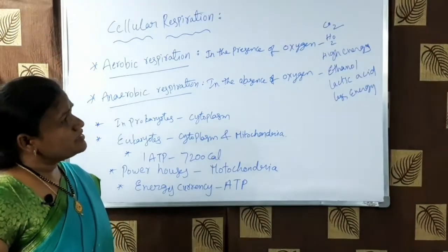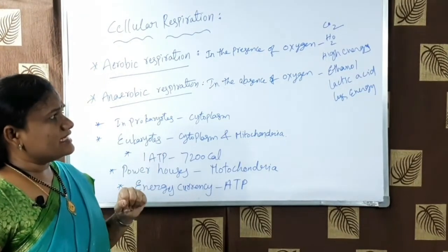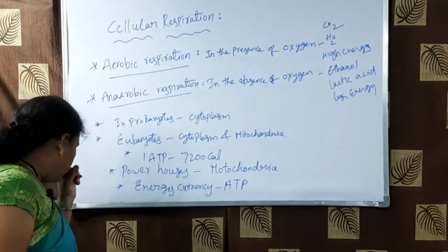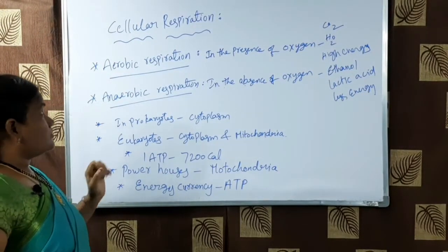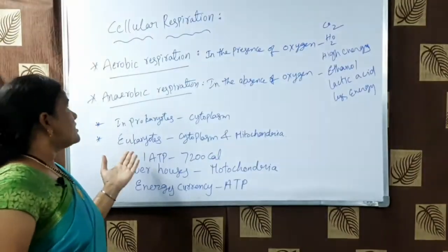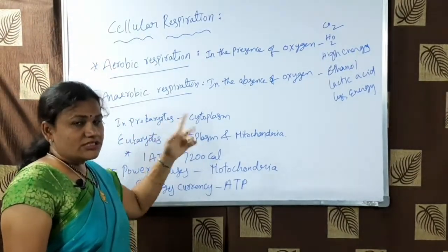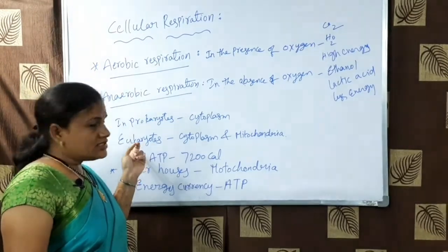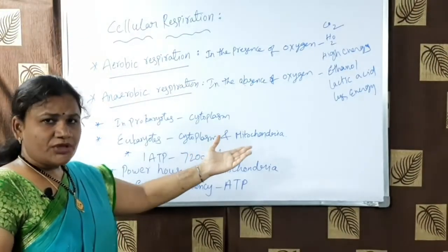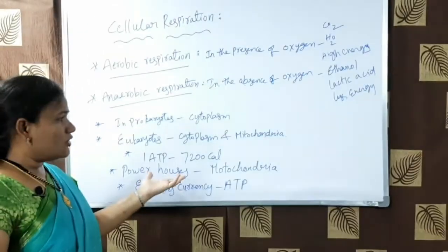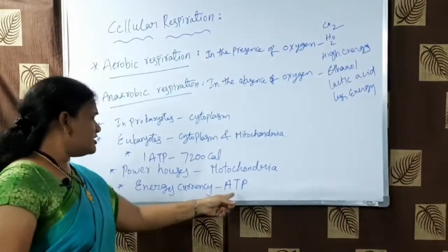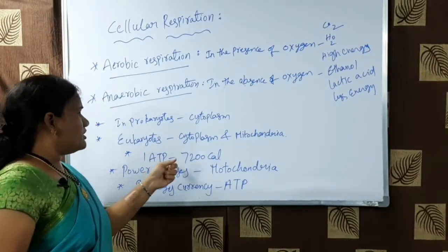In anaerobic respiration, in the absence of oxygen, in bacteria ethanol is produced and in yeast lactic acid is produced, along with less energy. Every organism must perform cellular respiration to get energy. In prokaryotes this takes place in the cytoplasm; in eukaryotes it takes place in the cytoplasm and mitochondria. Mitochondria are called the powerhouses of the cell, and ATP is the energy currency. One ATP molecule gives 7200 calories of energy.